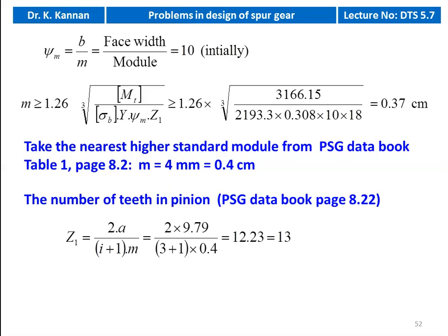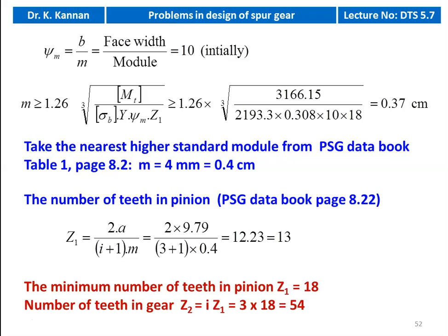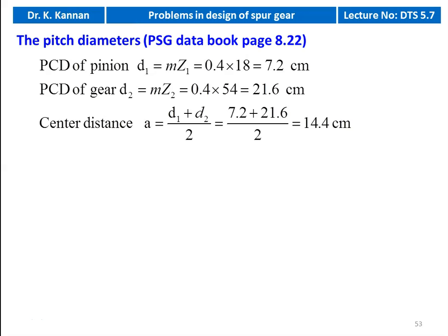Now we calculate the number of teeth on the pinion: z1 equals 2a divided by (i+1) into m, so 2 × 9.79 divided by (3+1) × 0.4 equals 12.23 — we round to 13. But we take the minimum number of teeth z1 equal to 18. Number of teeth on the gear z2 equals i × z1 = 3 × 18 = 54. PCD of the pinion d1 equals m × z1 = 0.4 × 18 = 7.2 centimeter. PCD of gear d2 equals m × z2 = 0.4 × 54 = 21.6 centimeter. Center distance a equals (d1+d2)/2 = (7.2+21.6)/2 = 14.4 centimeter.